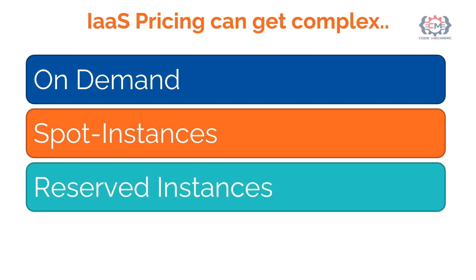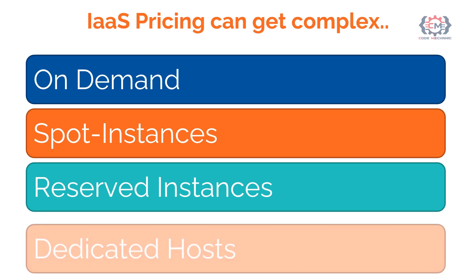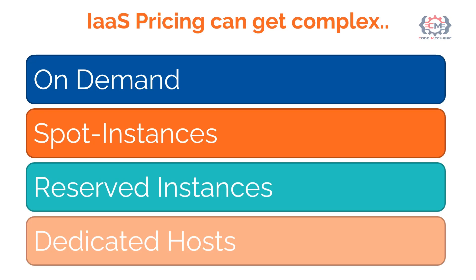Then there are reserved instances. Reserved instances are less expensive than on-demand pricing, but a 1 to 3 year commitment is required. If you intend to operate certain production apps in the cloud for an extended period of time, you should follow this procedure, as you have committed to paying for that term. Then there are dedicated hosts, which may be used for the most important production apps that you plan to run in the cloud for an extended period of time.